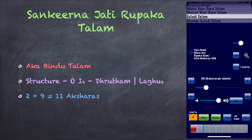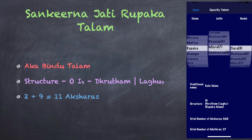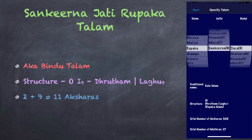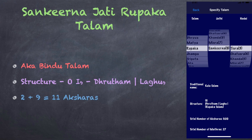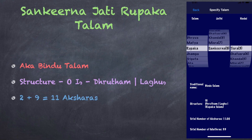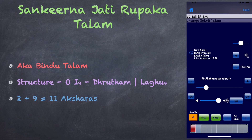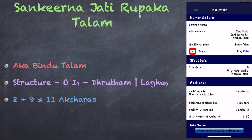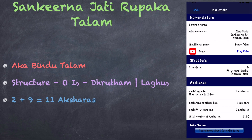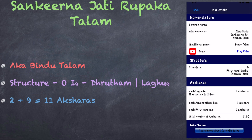Sankirna Jathi Roopaka Thalam. This thalam is also known as Bindu thalam. A roopaka thalam consists of a dhrutam followed by a lagu. In Sankirna Jathi, the lagu has 9 aksharas. Therefore, this thalam has a total of 11 aksharas, split into 2 groups of 2 plus 9.